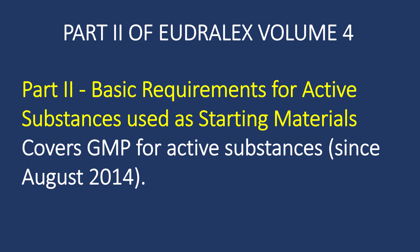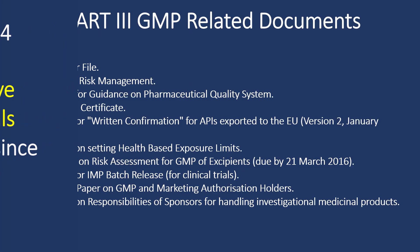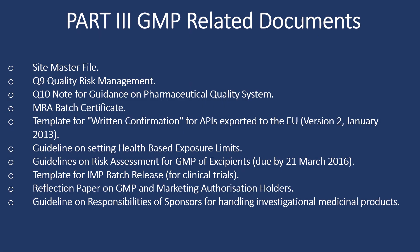As previously mentioned, Part 2 of EudraLex Volume 4 is for basic requirements for active substances used as starting materials, which covers GMP for active substances. This Part 2 has been in effect since August 2014. Part 3 is for GMP related documents which majorly covers site master file, ICH Q9, ICH Q10, MRA, batch certification and templates for return confirmation for APIs exported to the EU.